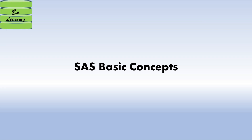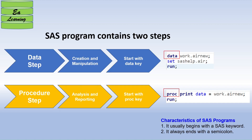Today I'm going to talk about basic concepts in SAS programming. A SAS program contains two steps: the first one is a data step, used for creation and manipulation of data, which always starts with the keyword 'data'. The second one is a procedure step, also known as a proc step, used for analysis and reporting, which always starts with the 'proc' keyword.